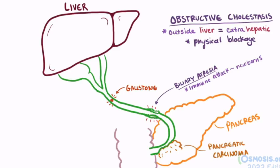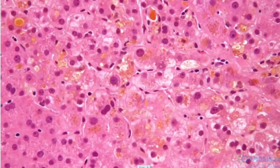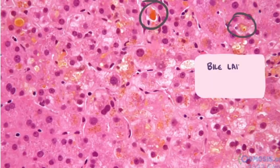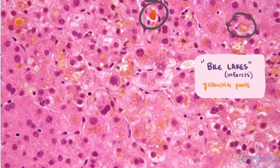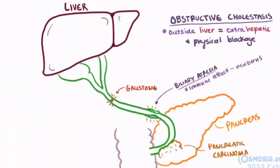This buildup of bile will be pretty obvious on histology of the liver, and will look like bile lakes or bile infarcts — pools of yellowish-green bile that have made their way into the interstitial space. If we look at the gross image of the liver, all this bile will cause it to take on a yellowish-green color.